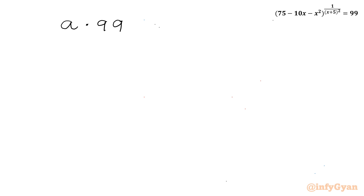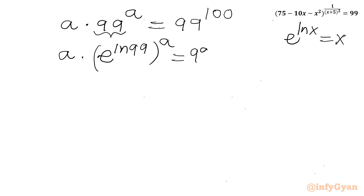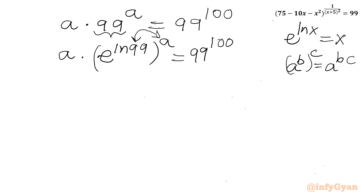Now we know that e raised to the power ln(x) equals x. So I can write a times e raised to the power (ln 99) whole raised to the power a, equals 99^100. Using the exponent property a^b^c = a^(bc), we get a times e raised to the power (a · ln 99) equals 99^100.